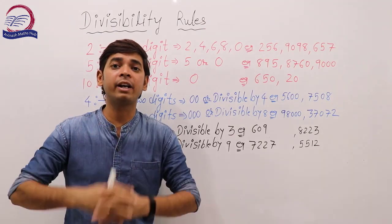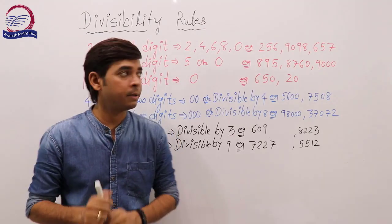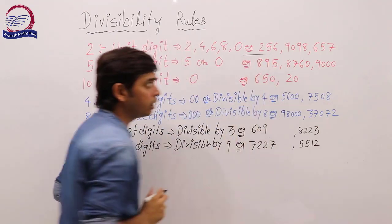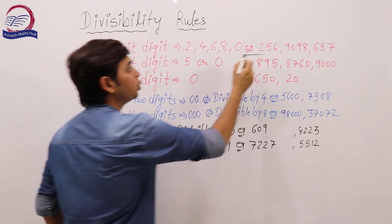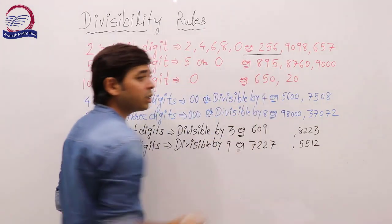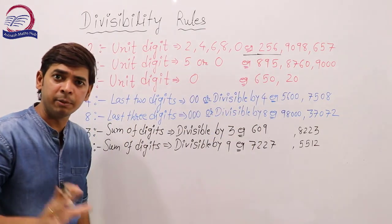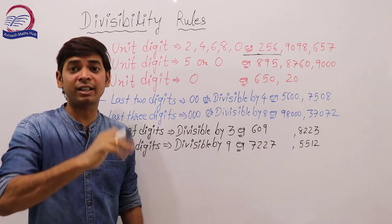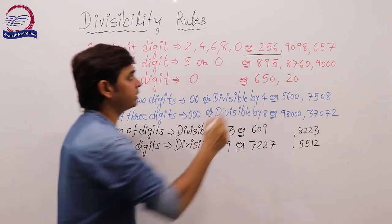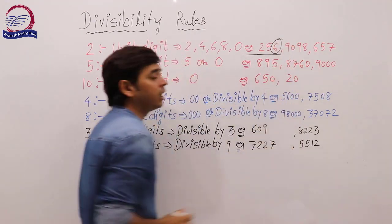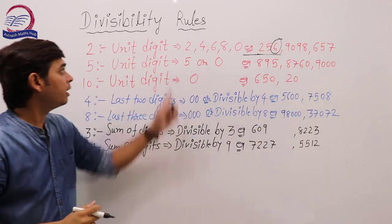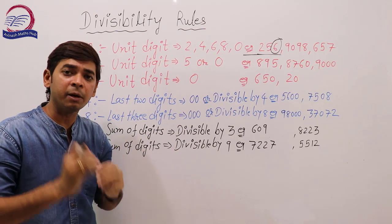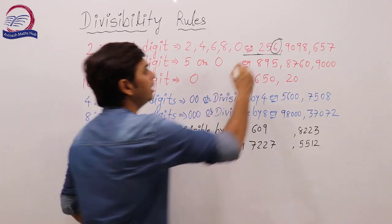Now let's see some examples. Take 256. Is this number divisible by 2? We look at the unit digit, which is 6. Since 6 is in the list 2, 4, 6, 8, 0 — yes, 6 is there. So this number is divisible by 2.